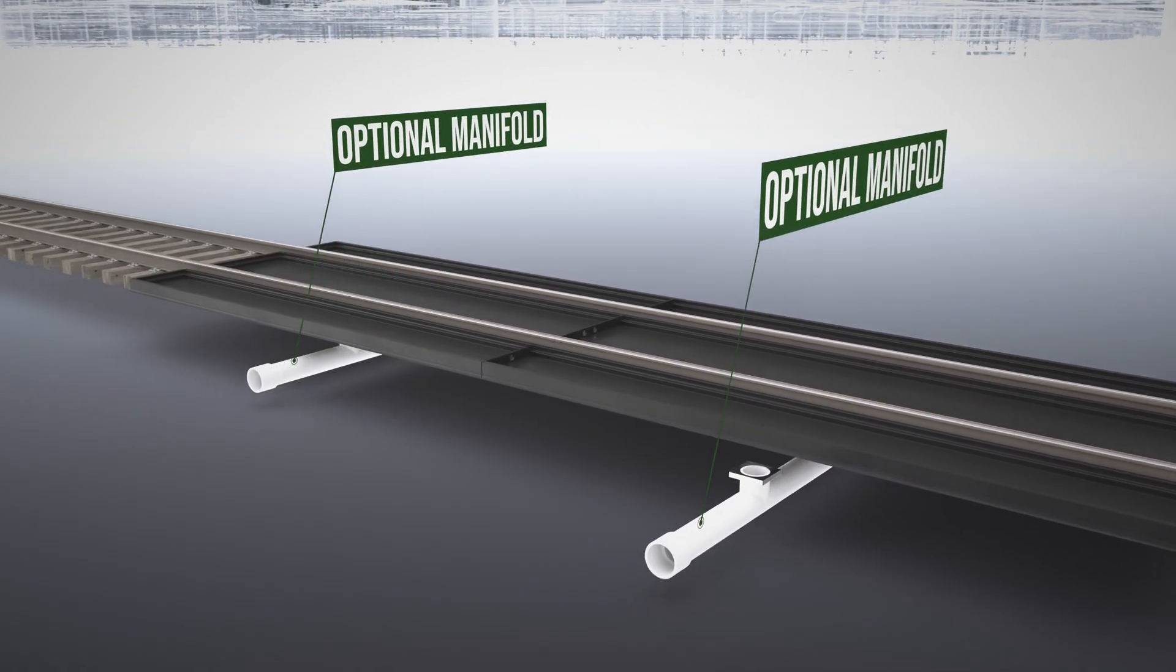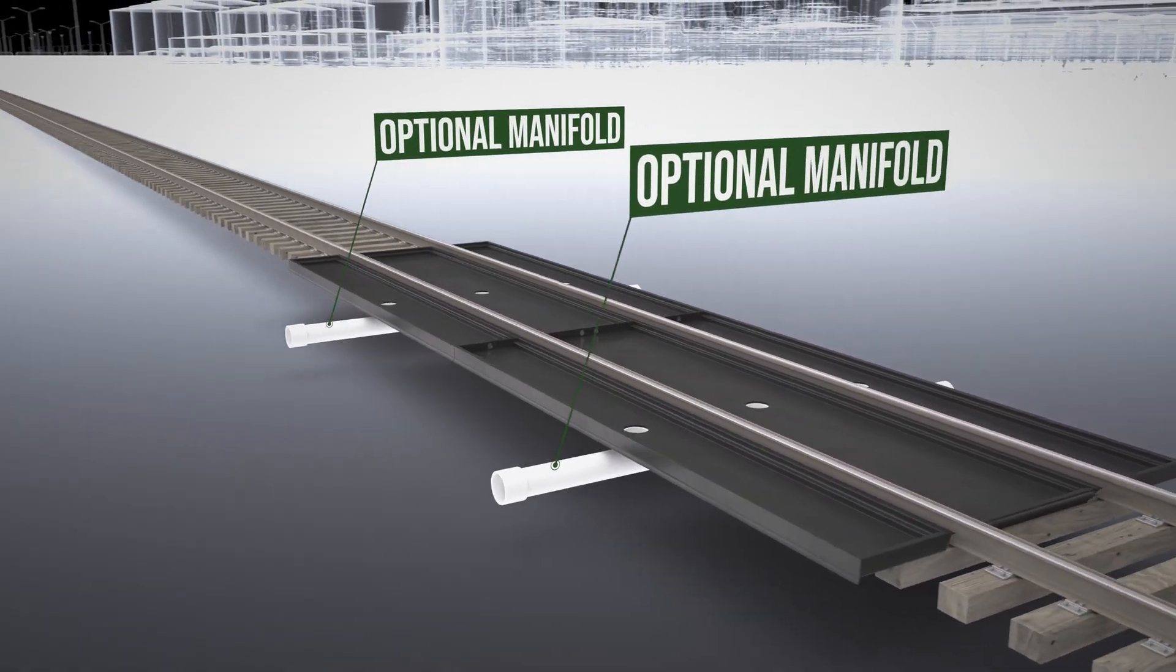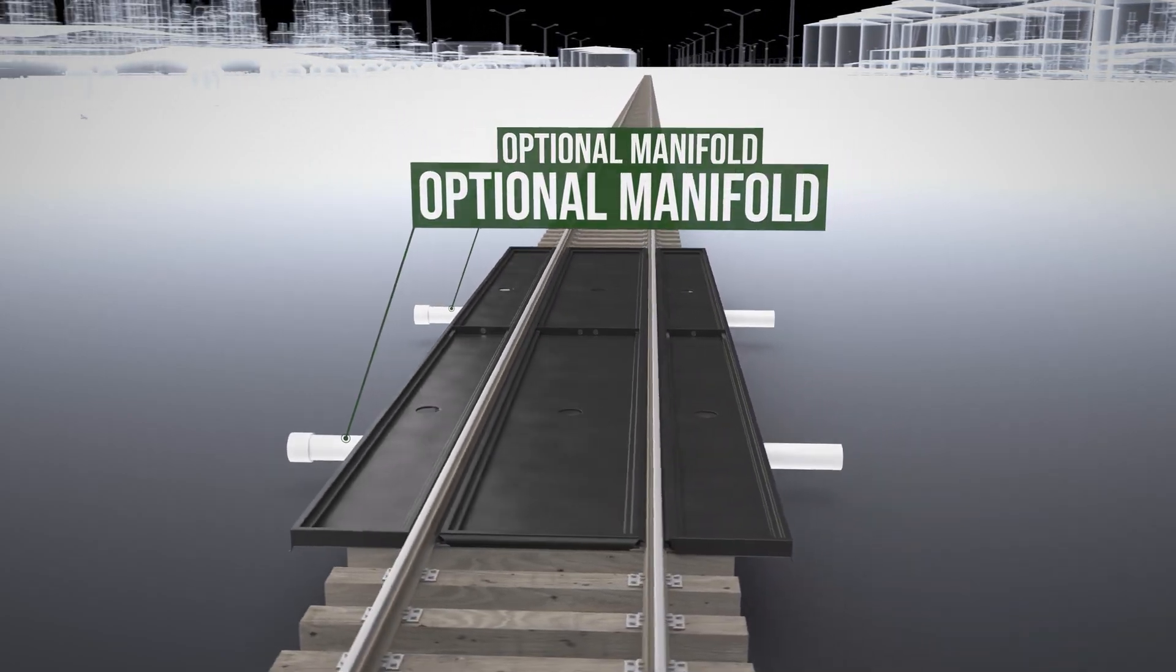An optional manifold is available to allow pans to be connected to off-site containment via below-grade piping.